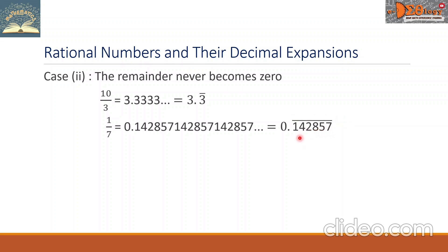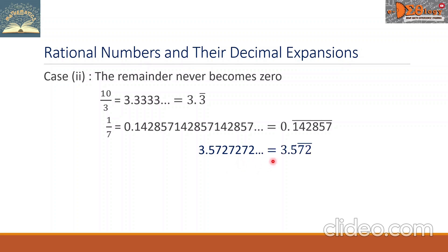Meaning these digits 1, 4, 2, 8, 5, 7 repeat. When we have another example, say 3.572727272 and so on, in this example only the block of digits 7, 2 repeat. So we write 3.5 with a bar on the block 7, 2.